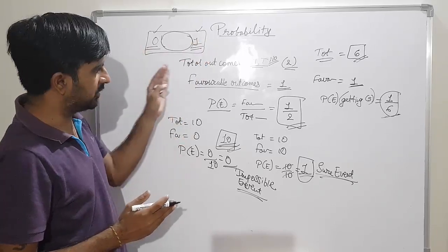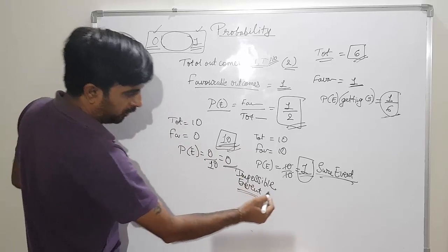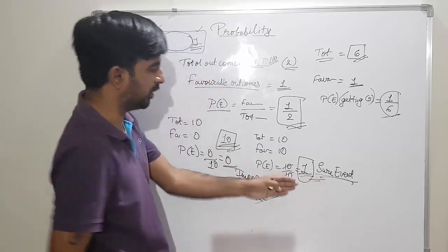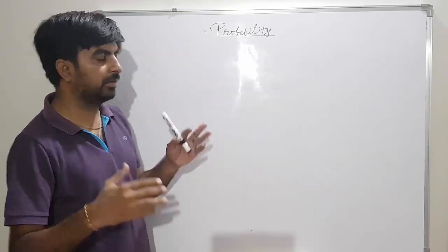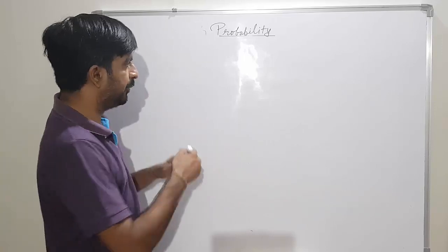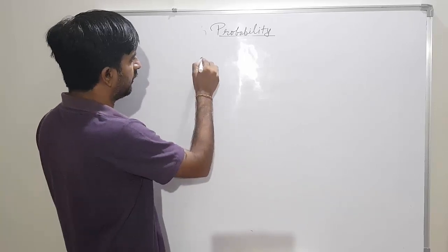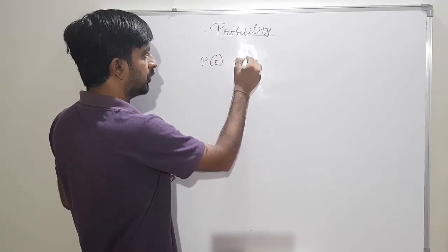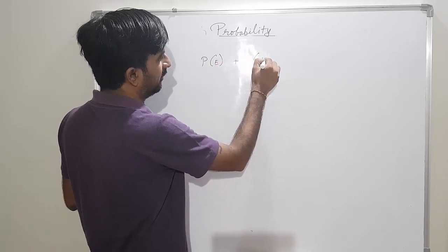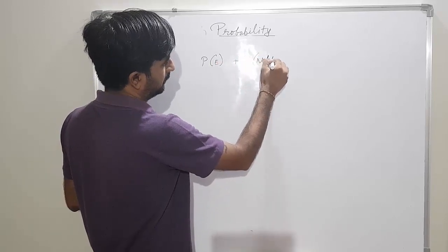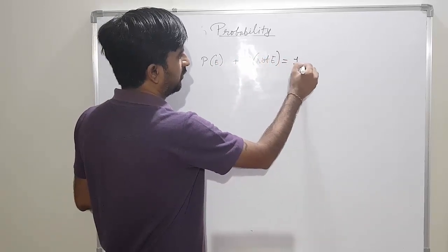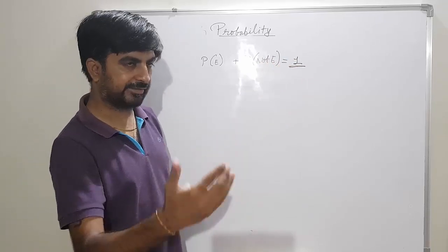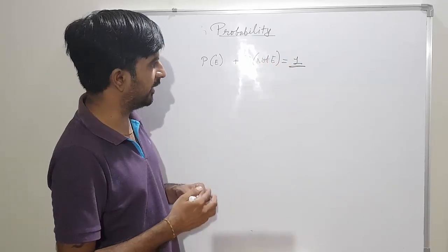When the answer is zero, it is called an impossible event. When the answer is one, it is called a sure event. The probability of an event plus the probability of its complement is always equal to one. Let me explain by giving one example.